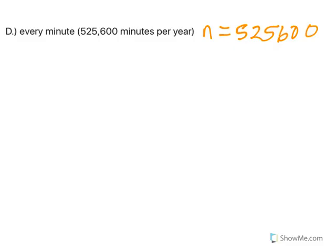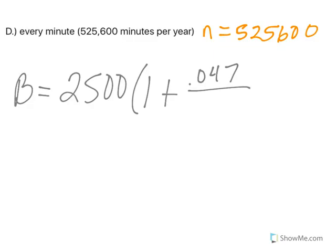So when I plug this into my formula, I've got my 2,500, 1 plus .047, divided by that big 525,600, and then we're raising it to that power.